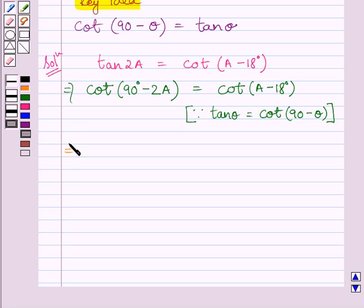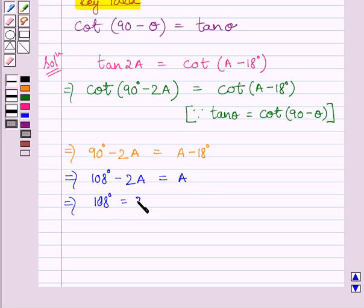So this implies 90 degrees minus 2A is equal to A minus 18 degrees. Now, adding 18 degrees on both sides, we get 108 degrees minus 2A is equal to A. Now, adding 2A on both sides, we get 108 degrees is equal to 3A.